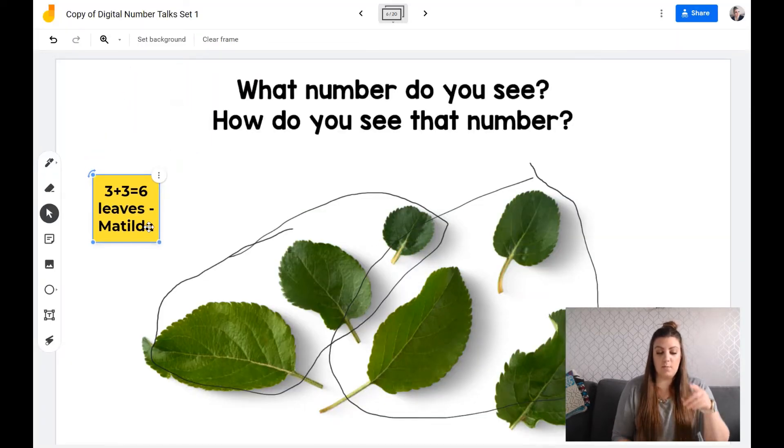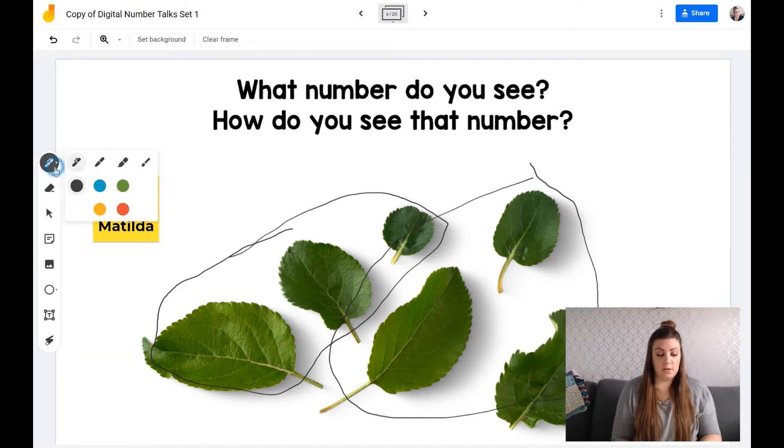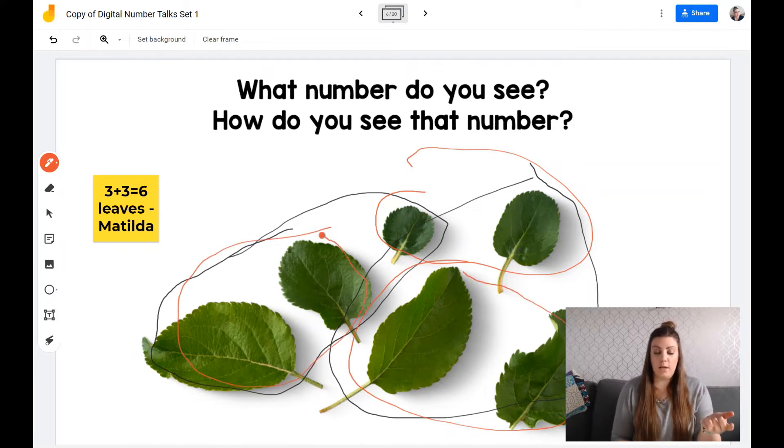So that's what I really like about Jamboard is that you're able to color in on the picture. You're able to add sticky notes to really showcase what the students are thinking. And you're able to write it down as well so that other students are able to see the same thing. And you can even change the pen color. So now maybe Matilda saw that, but then another child saw two and two and two make six. So then you can write that out as well. So you can use different colors and different colored sticky notes as well.